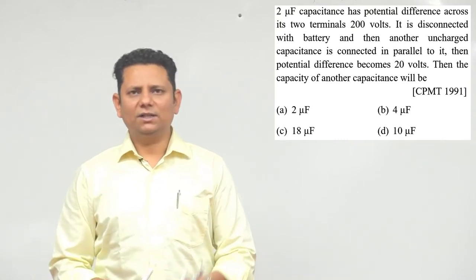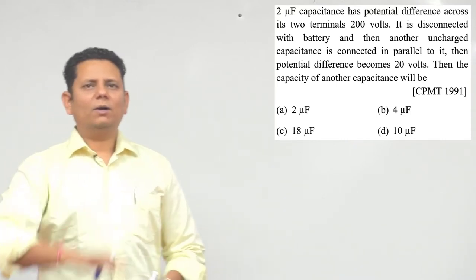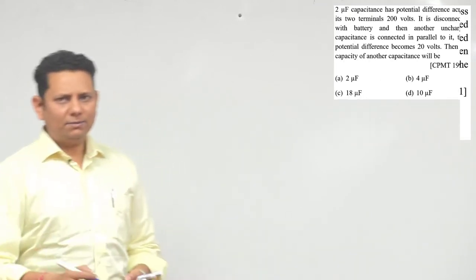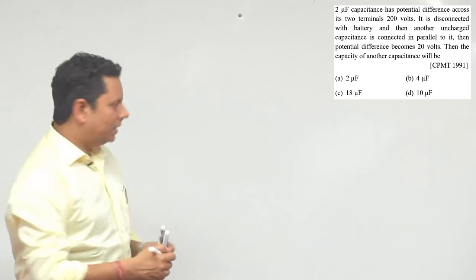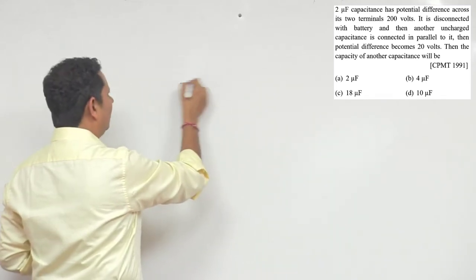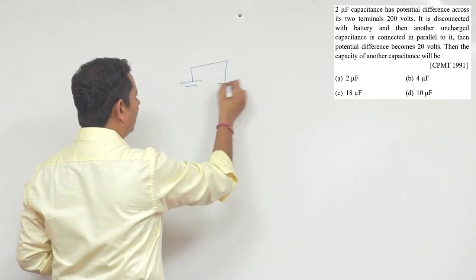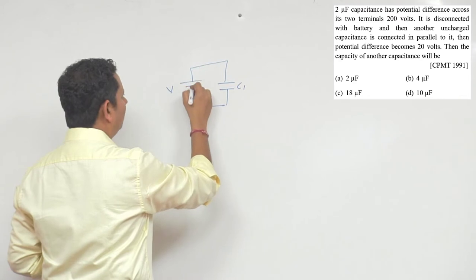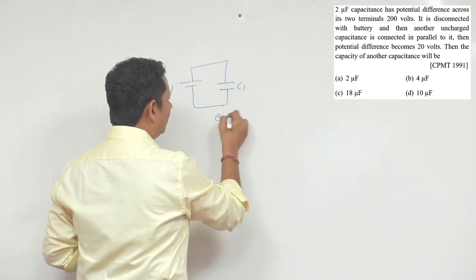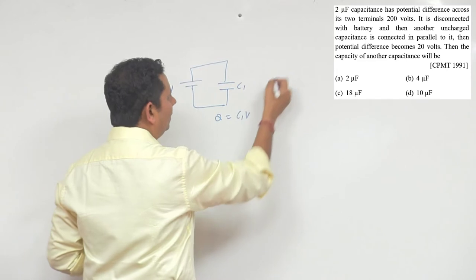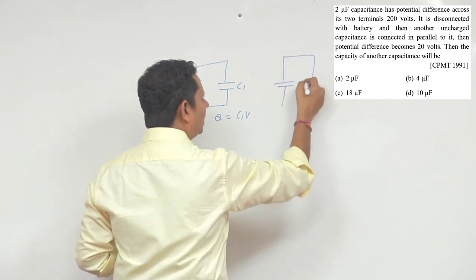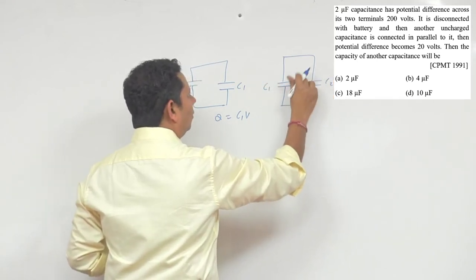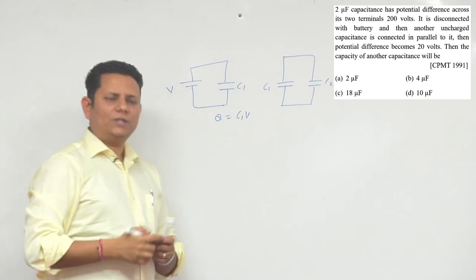So we have two capacitors. The first capacitor C1 is given a voltage V to fully charge it, so Q is equal to C1 times V. Then capacitor C2 is joined in parallel with C1.